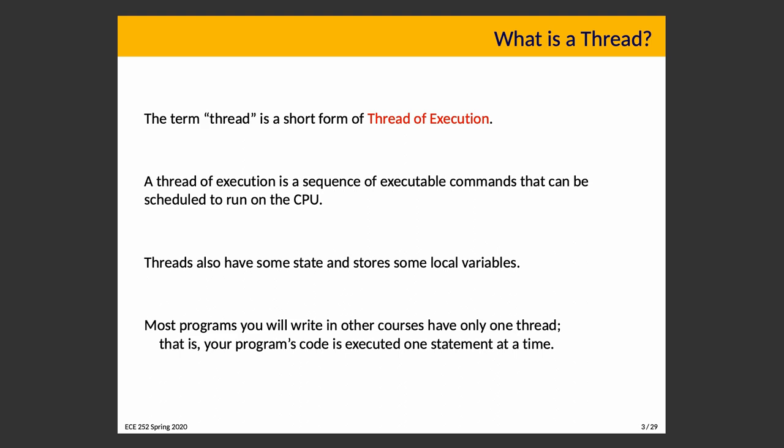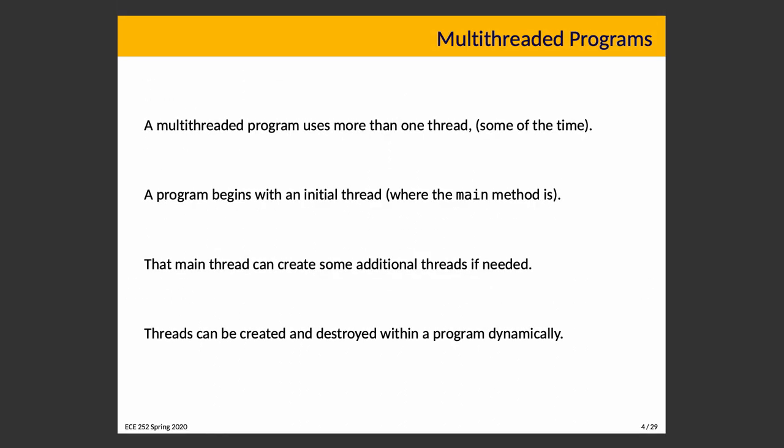A program is multi-threaded if it uses more than one thread at least some of the time. When you start your program, it begins executing with the initial thread — that's where main is, the main or root thread for your process. That thread can, and frequently will, create additional threads if needed. Threads can be created and destroyed dynamically as necessary, or you could choose to make them persistent — create a number of threads and keep them around to do specific jobs.